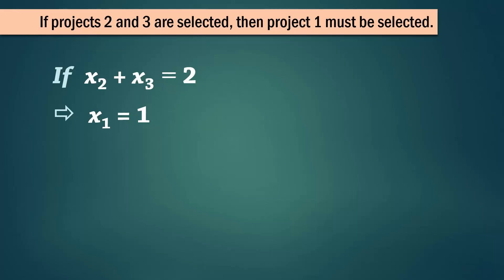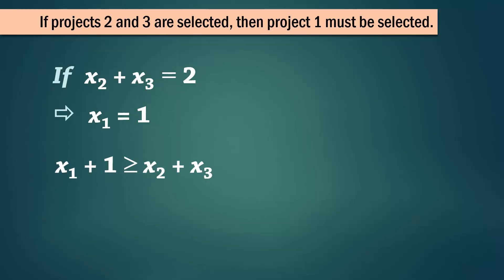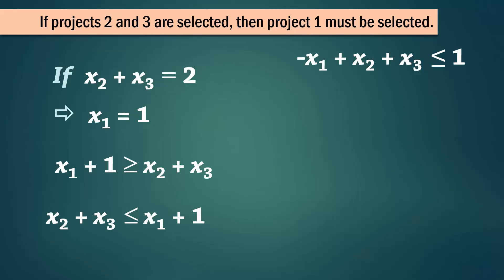Because projects 2 and 3 together are dependent on project 1, x1 + 1 ≥ x2 + x3, or equivalently x2 + x3 ≤ x1 + 1, or −x1 + x2 + x3 ≤ 1.